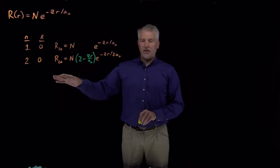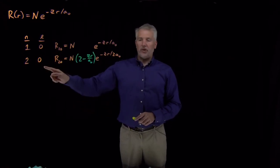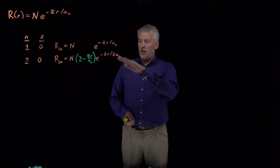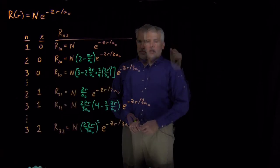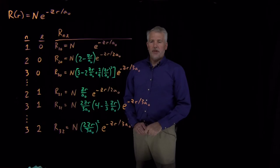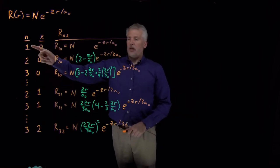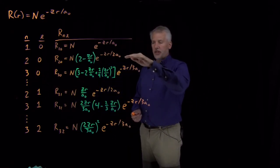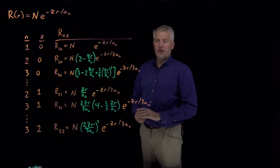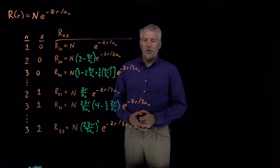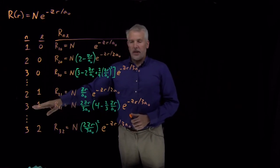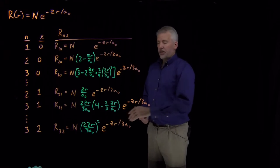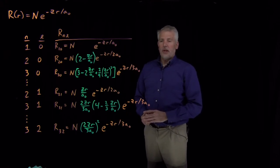There's an infinite series of these solutions, and also a whole different set when L equals one, L equals two, and so on. When L equals zero there are N equals one, two, three solutions. For the L equals one radial Schrödinger equation there's N equals two, N equals three, and so on. There's only one example shown for the L equals two function, but the point is there's a very large family of solutions to the radial Schrödinger equation, and looking carefully we can see things they have in common.